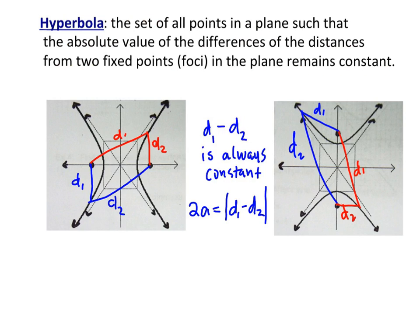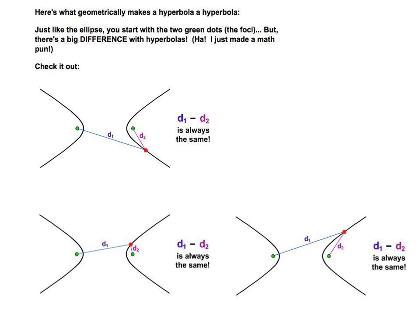So for any point along the hyperbola, this side or this side, the distance starts here, gets to one focus, and then gets to the other focus, and then you can subtract those values. Those values are always constant, the distance when you subtract one from the other.